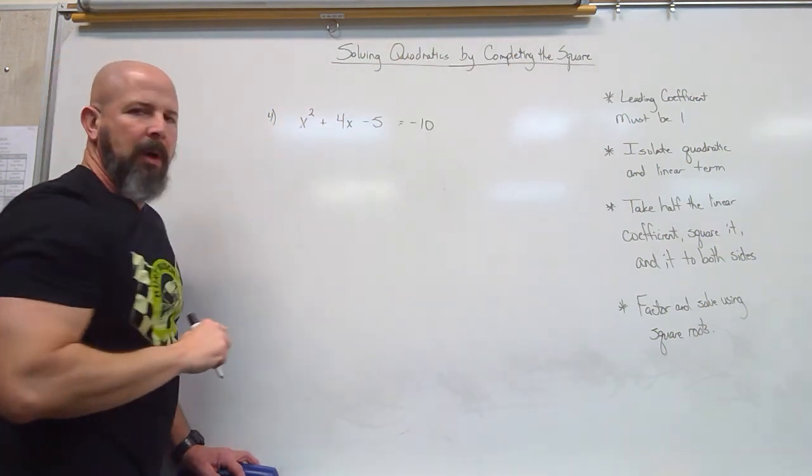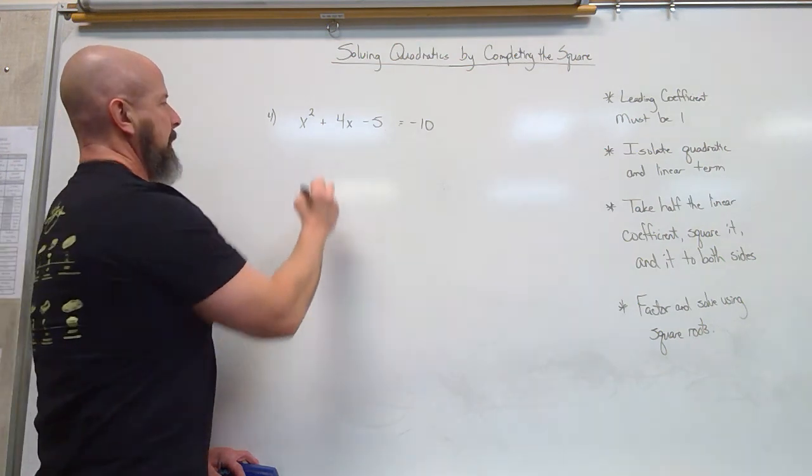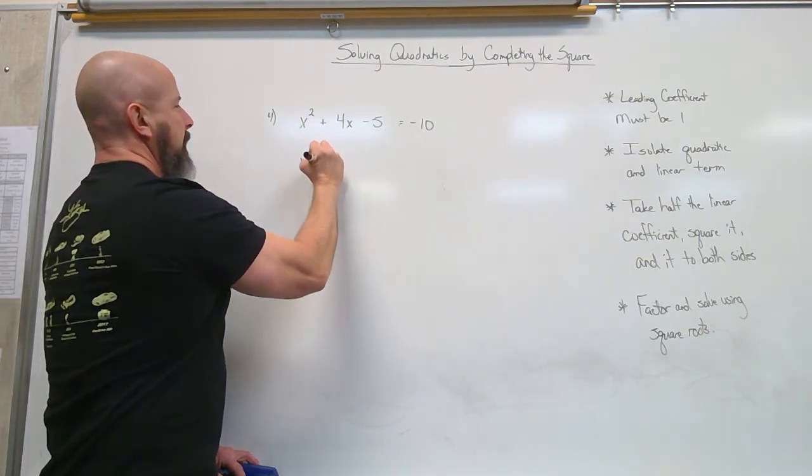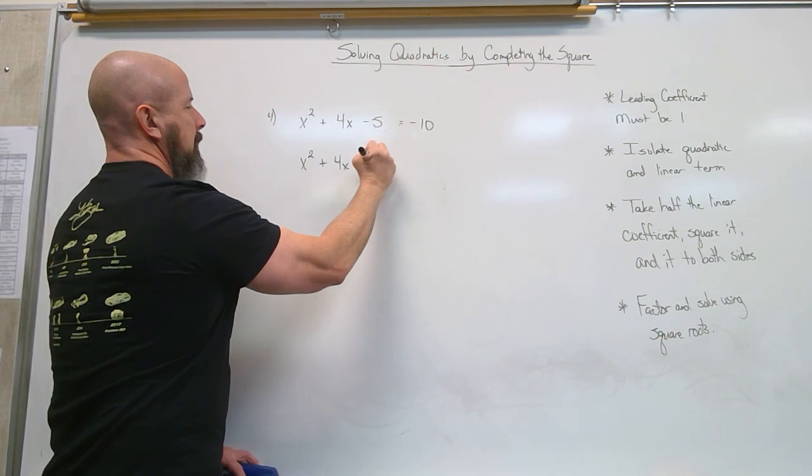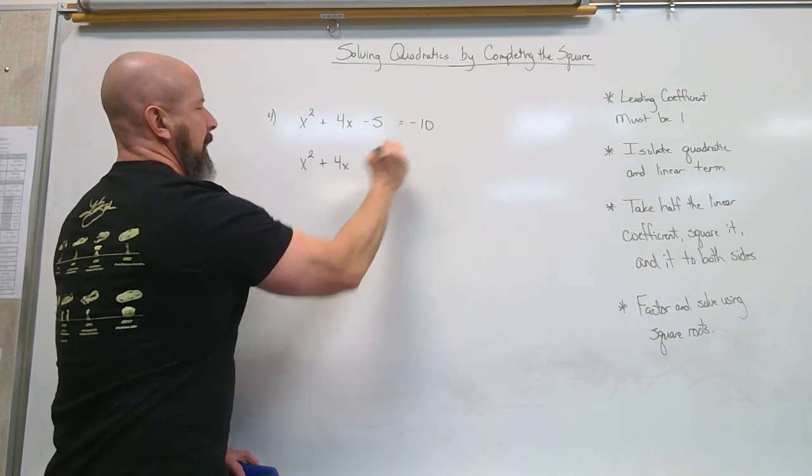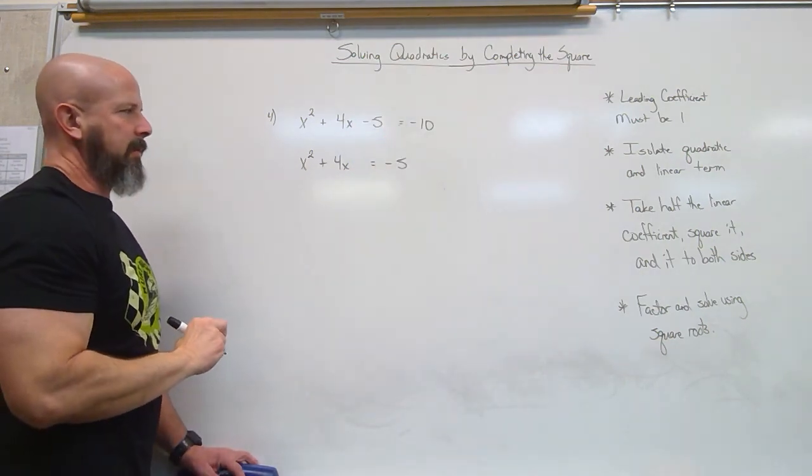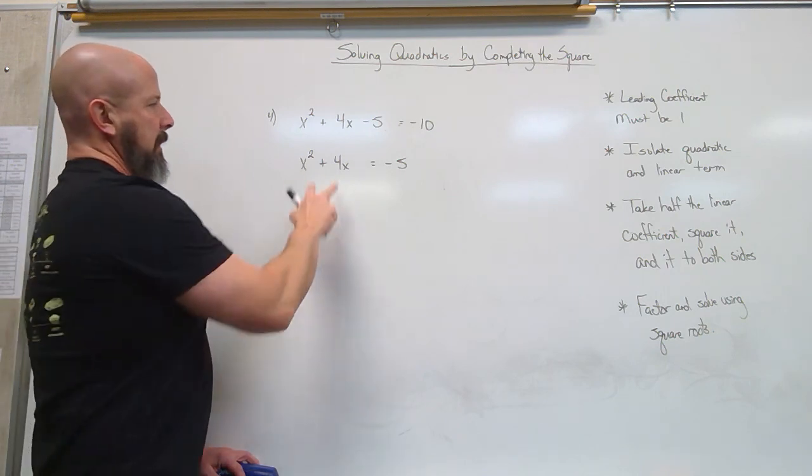My leading coefficient is a 1. I don't need to worry about division this time. So if I move that 5 over, I get negative 5. Negative 10 plus 5. They're isolated.